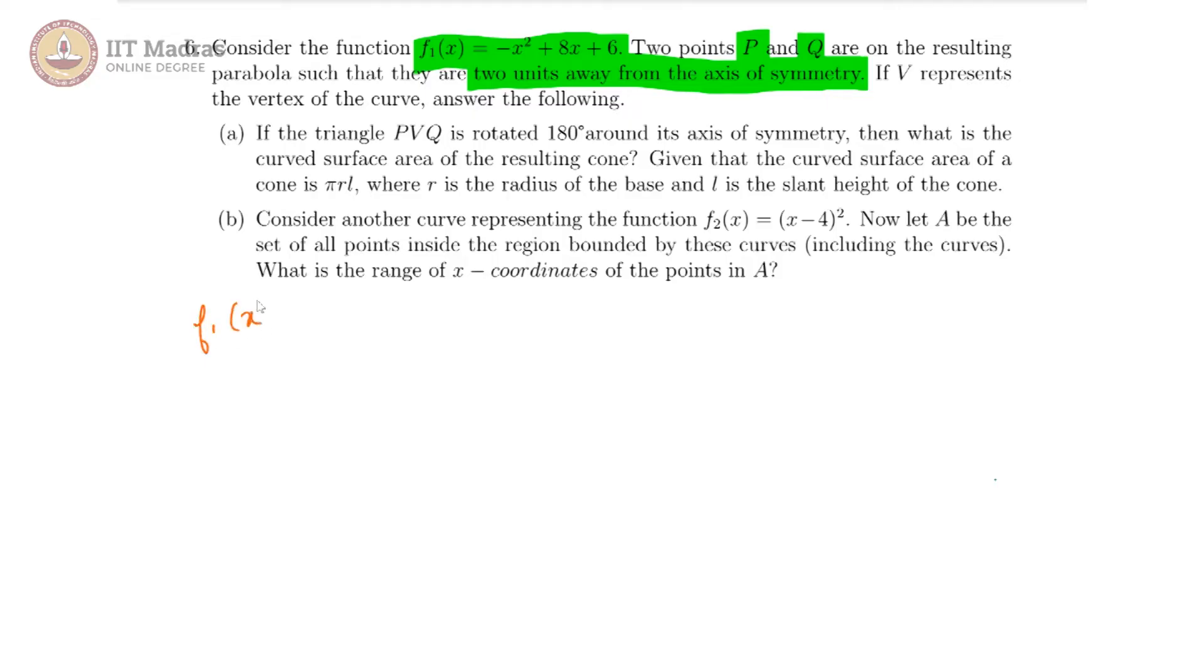Our equation is f1 of x equals minus x square plus 8x plus 6, and that would mean in the standard form a equals minus 1, b equals 8, and c equals 6. That gives us the vertex at x equals minus b by 2a, which in our case becomes b is 8, a is minus 1, so we will get 4.